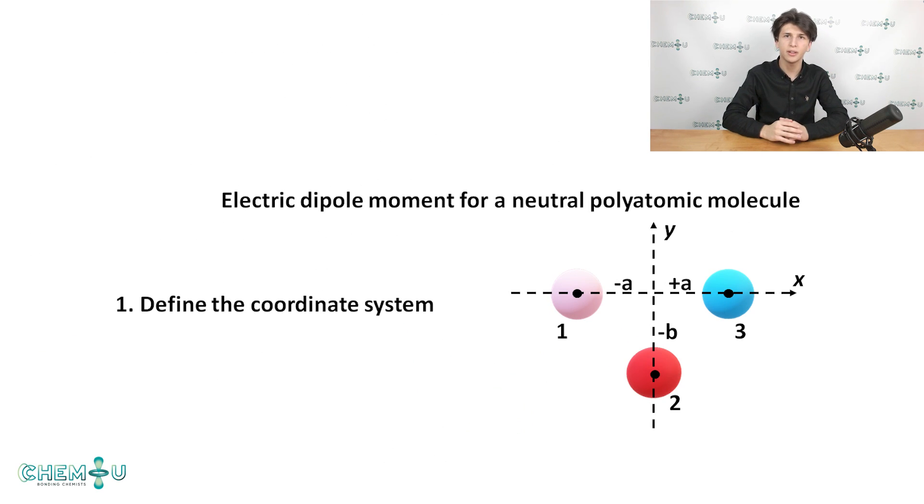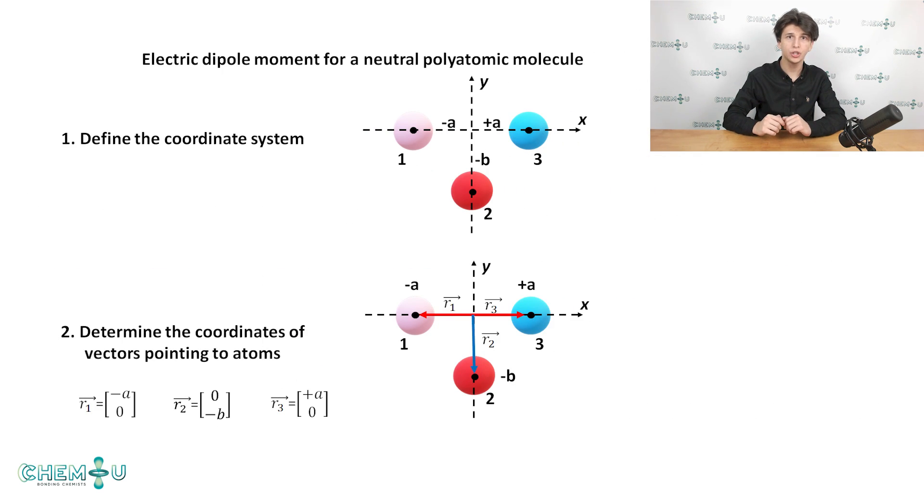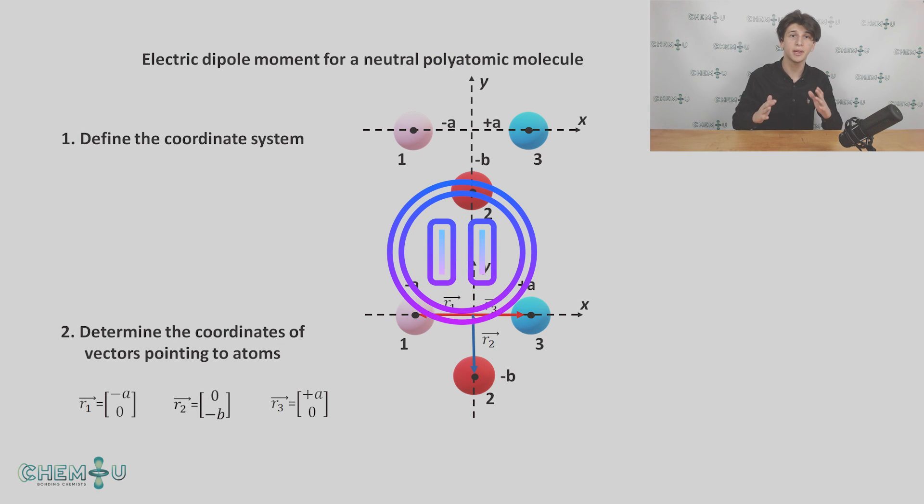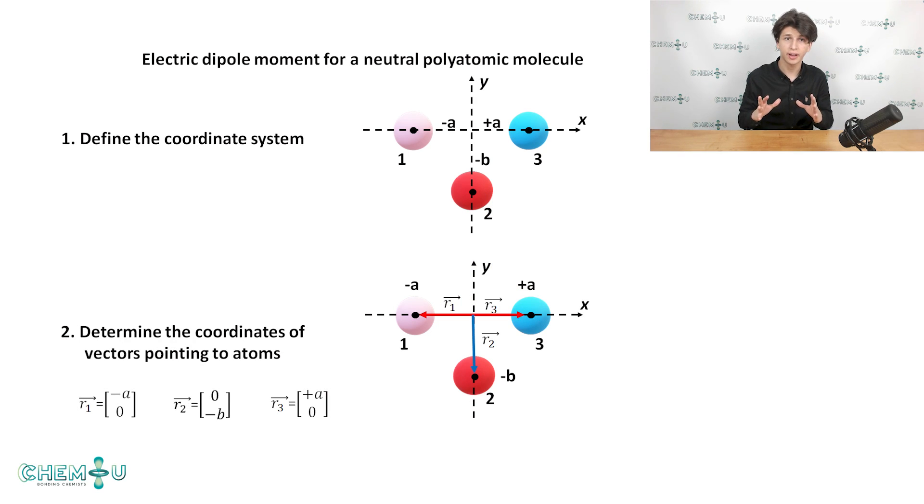First we need to define the origin of the coordinate system. The theory states that if the molecule is neutral, then the choice of the center does not influence the resulting dipole moment. Second, we should determine the coordinates of all atoms in our molecule and represent them in a vector form as shown on the screen now. I recommend you to pause the video and inspect the slide carefully. Take your time and make your notes. It should enhance your memorizing significantly.